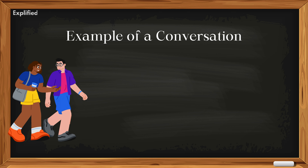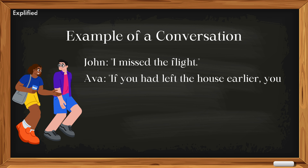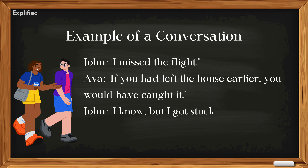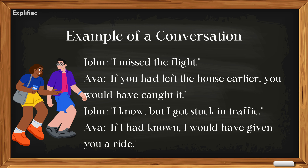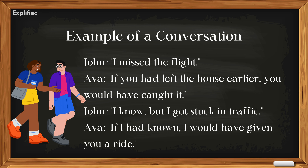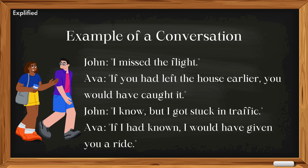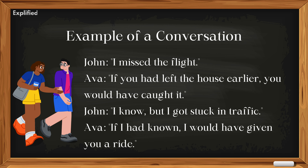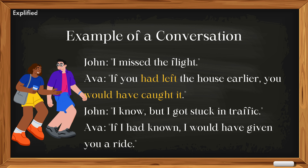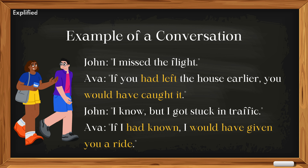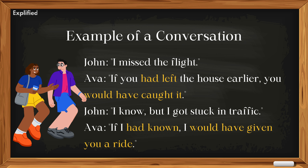Example of a conversation: 'I missed the flight.' 'If you had left the house earlier, you would have caught it.' 'I know, but I got stuck in traffic.' 'If I had known, I would have given you a ride.' In this conversation, the third conditional — had left, would have caught, had known, would have given — is used to discuss unreal past situations.